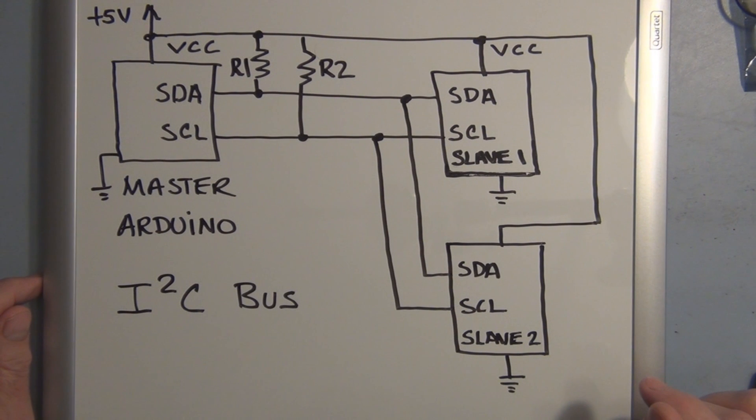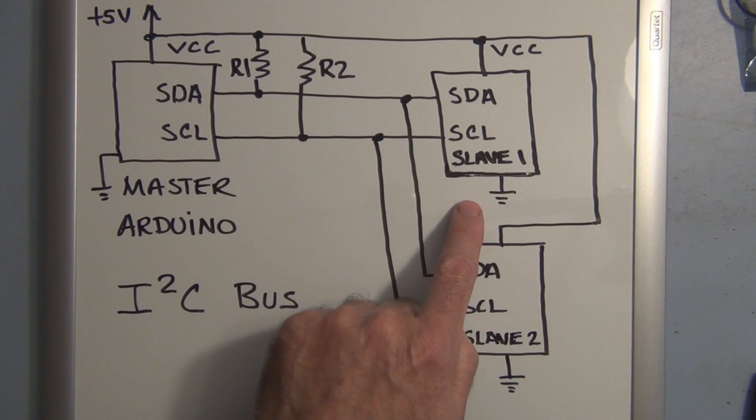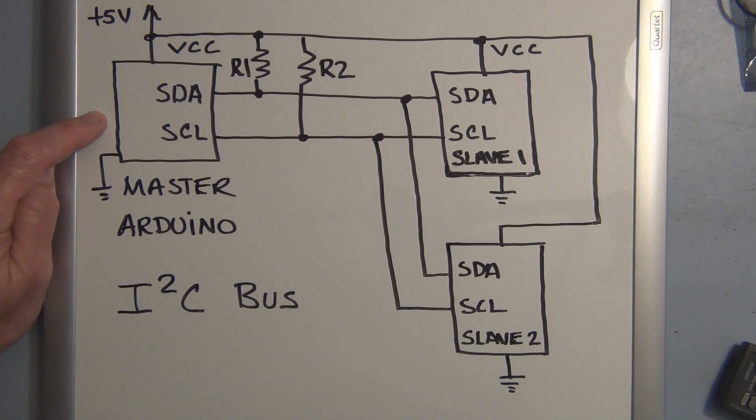It's a two-wire communication scheme and what you have is you have a master device and this controls or initiates the communication between your slave devices. In this instance, the temperature sensor. So this is the Arduino Uno, the master device, and we have serial data and serial clock.